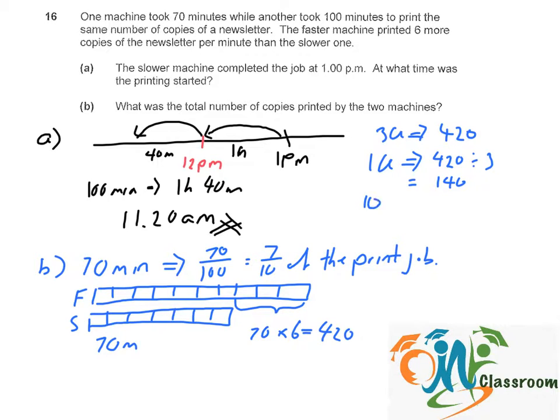So 10 units equals to 140 times 10, 1,400 copies. So for the total number of copies printed by the two machines, what we need to do is to take 1,400 times 2 equals to 2,800 copies.